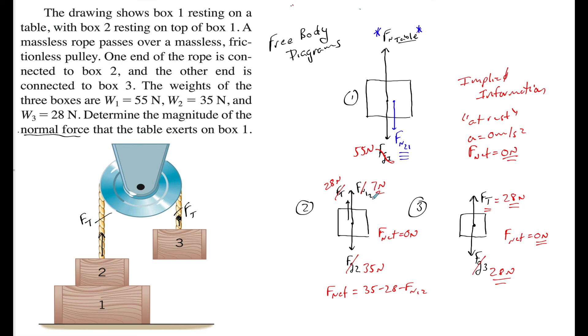Now, because this is an action-reaction force pair, I now know this is equal to 7 Newtons as well. This has to be equal to F net. So now we can solve for this to be 62 Newtons. That is the force that the table feels from boxes 1 and 2.